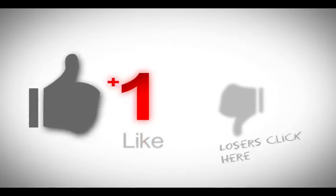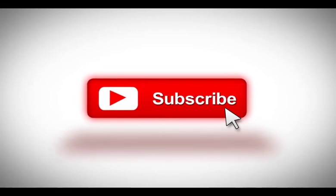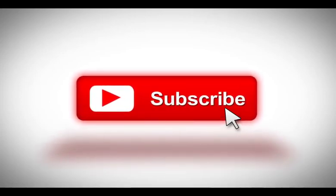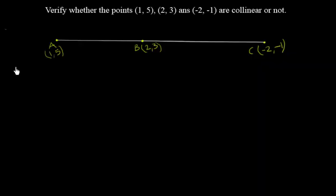Before you watch the video, please like our channel, subscribe, and click on the bell icon for notifications. Today we are going to learn about points which are collinear or not. Here we need to verify whether the points (1, 5), (2, 3), and (-2, -1) are collinear or not.